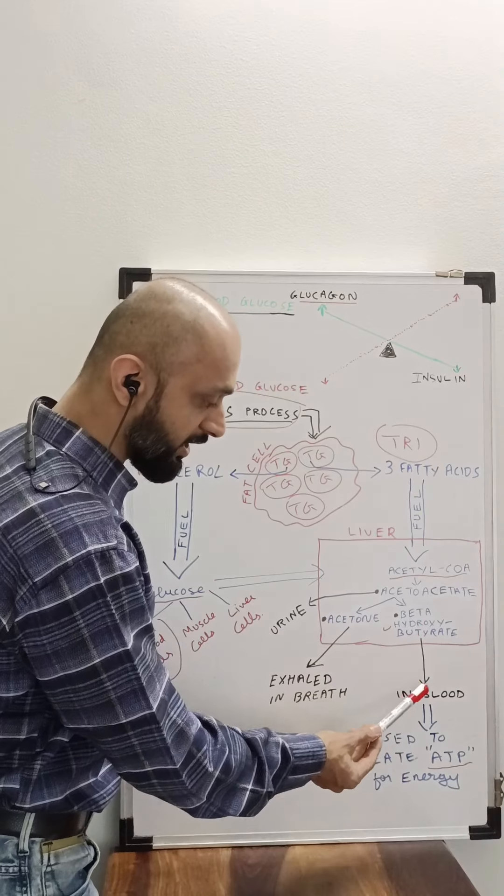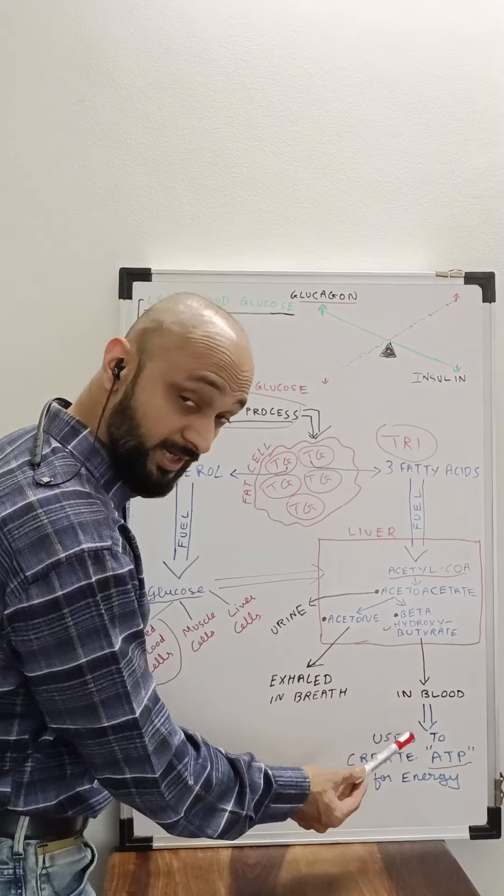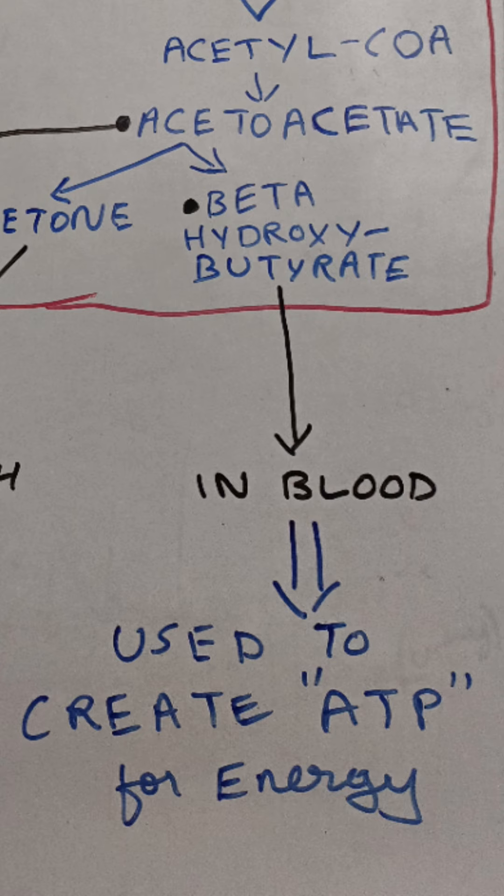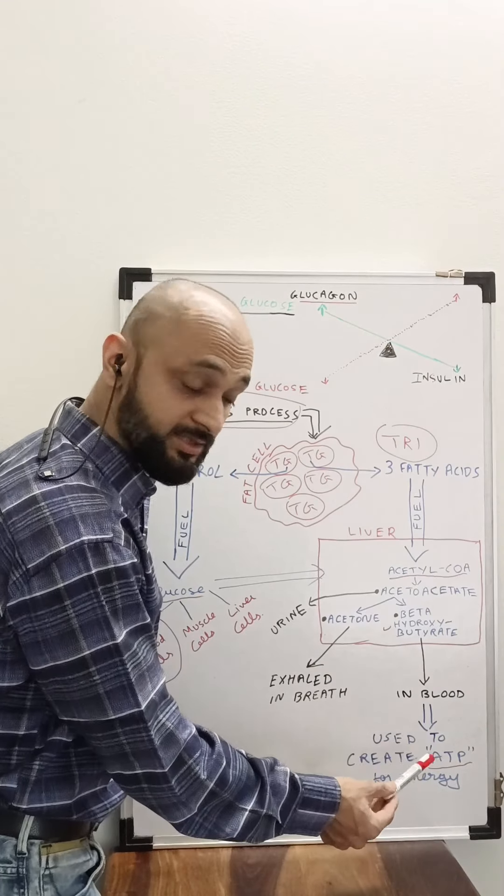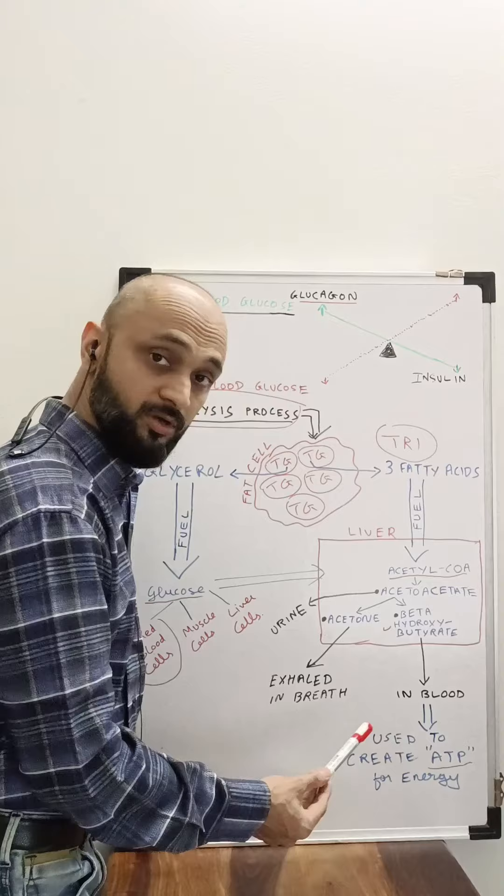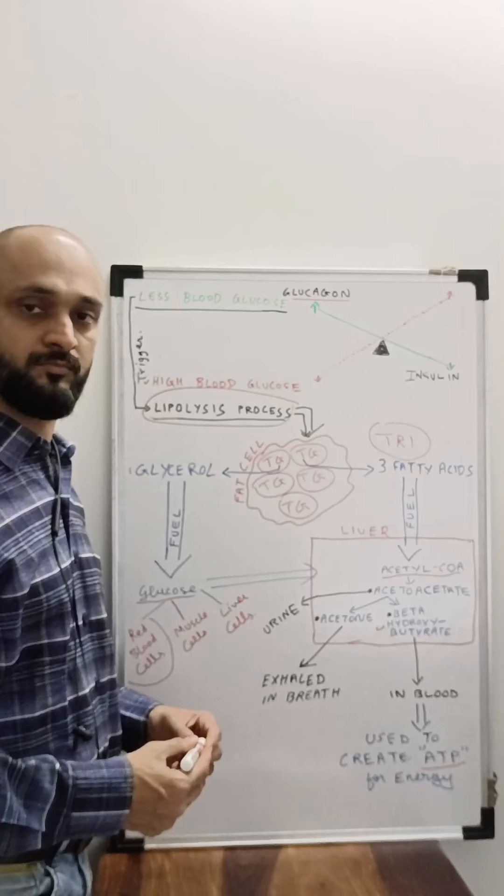Beta-hydroxy butyrate is then utilized to generate energy in the body. This again goes in the blood and then the body utilizes it. There is an entire different process happening after this, but this is an energy substrate for creating ATP for the muscle cells.